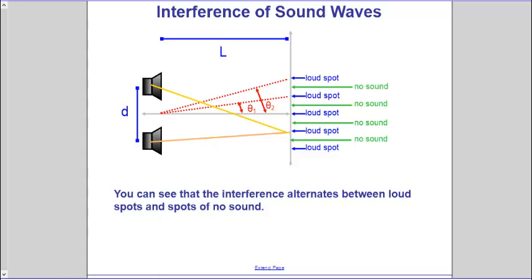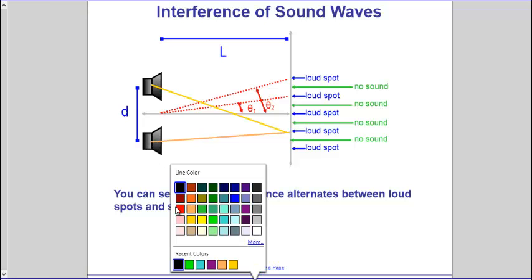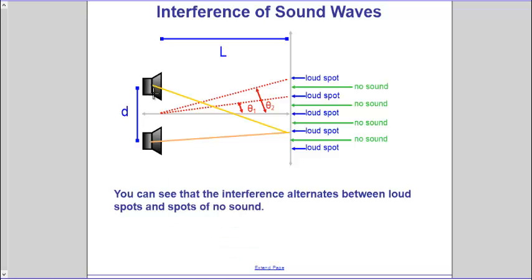We can determine the difference in distance by drawing a line. And that little bit of extra distance that's left over corresponds to one wavelength. Again, that extra distance corresponds to one extra wavelength of wave.